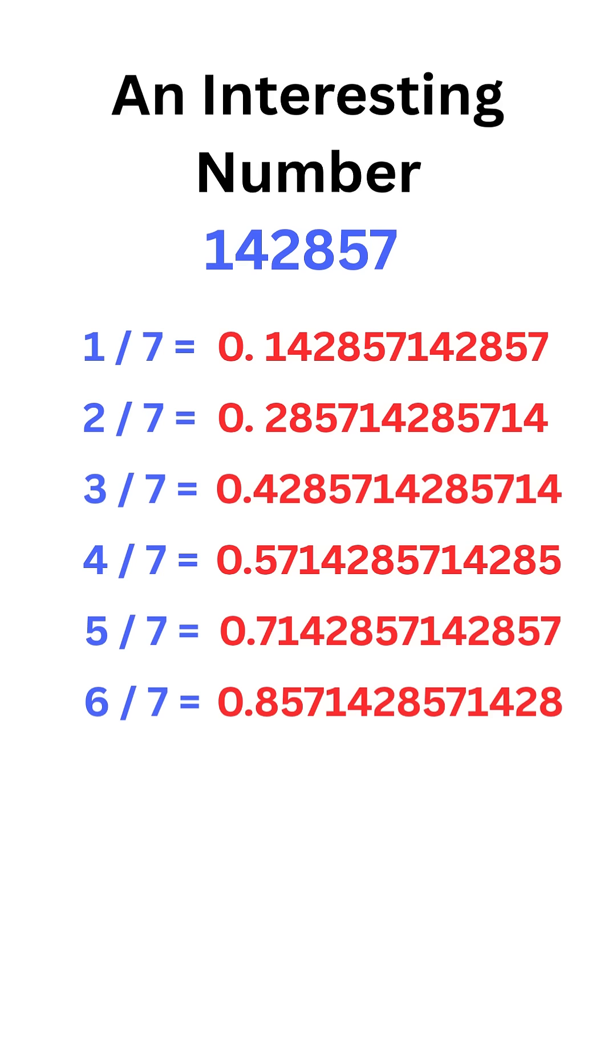142,857 is a cyclic number, and number 7 is magical. But wait, we are not done yet.